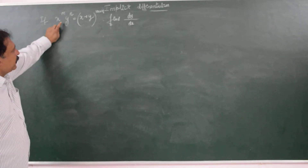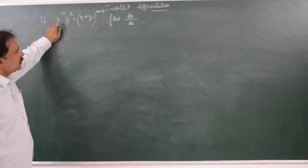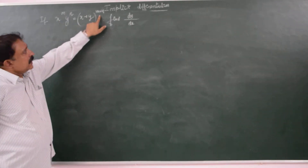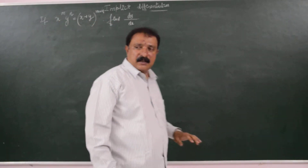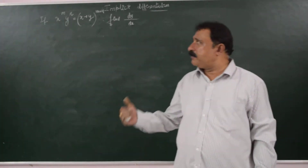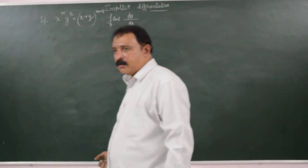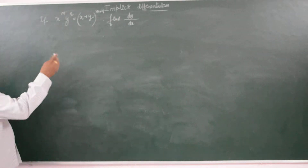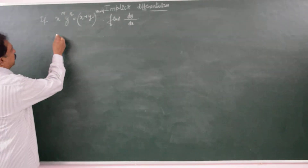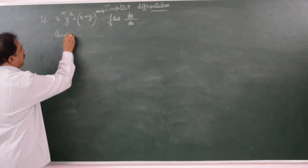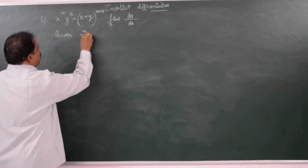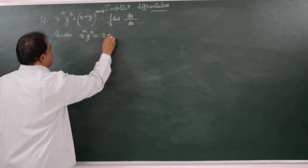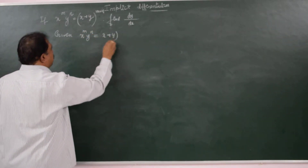If x to the power of m into y to the power of n is equal to x plus y to the power of m plus n, find dy by dx. This is also an implicit function because you cannot separate the variables. Given: x to the power of m into y to the power of n equals x plus y to the power of m plus n.